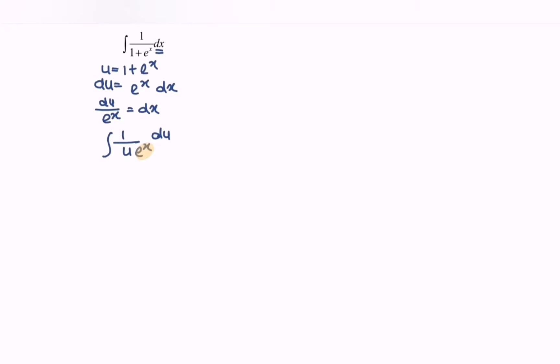Changing the subject so that we can replace the e to the x. So e to the x equals u minus 1. If we substitute this equation, we will have u multiplied by u minus 1.